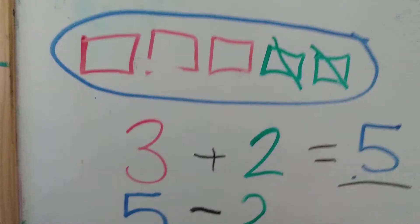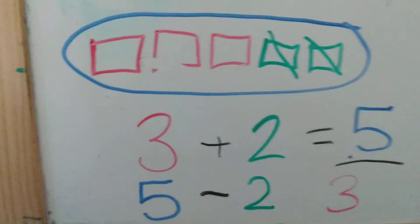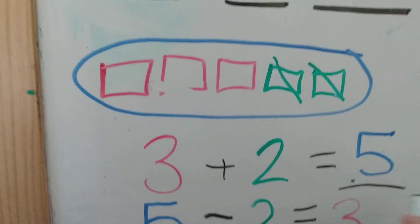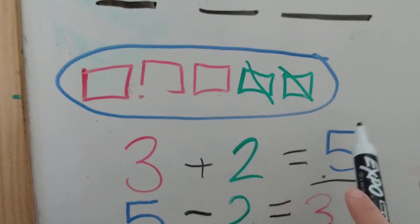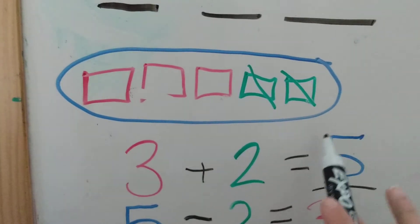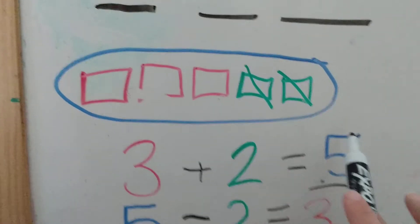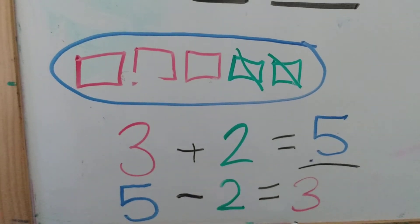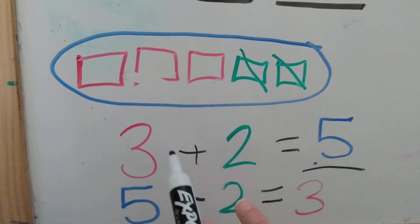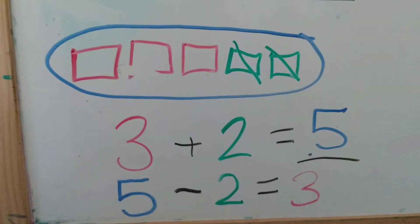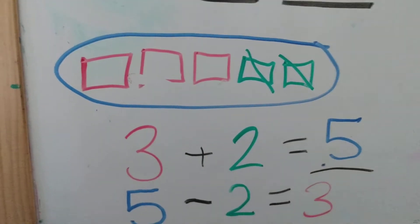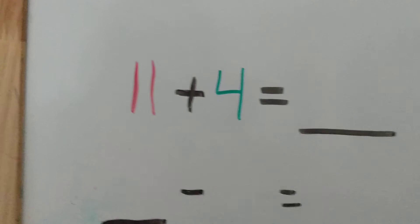That leaves us with the red, which is three. So that's how you make a subtraction problem out of an addition problem. If you knew what 5 minus 2 was, then you would know what 3 plus 2 was — do you see how they're related? We can use the same numbers. Now we're going to go to a bigger problem.